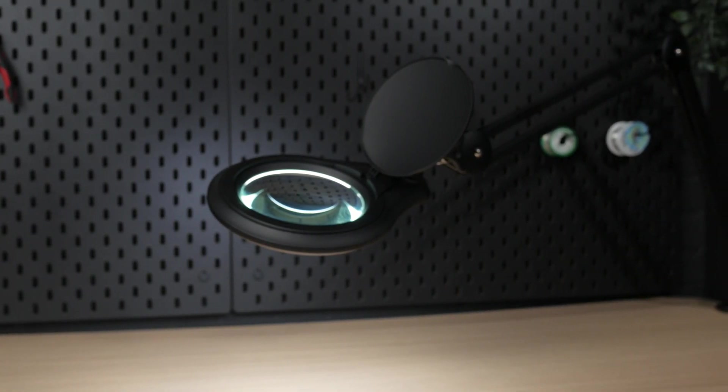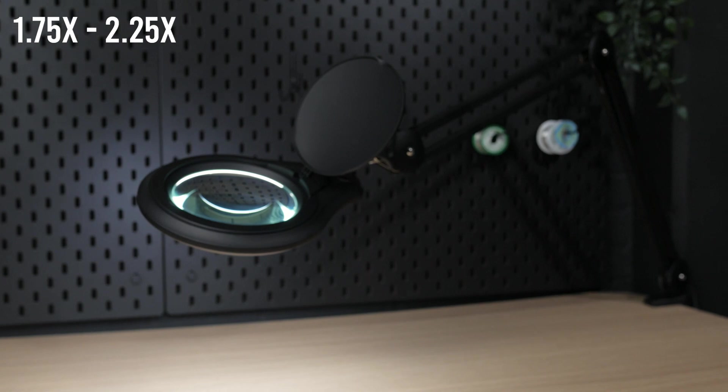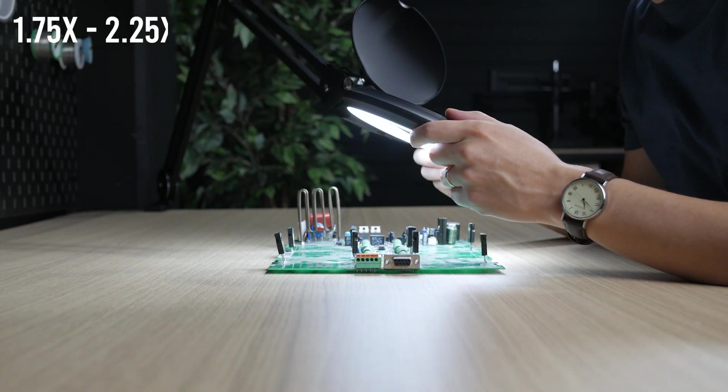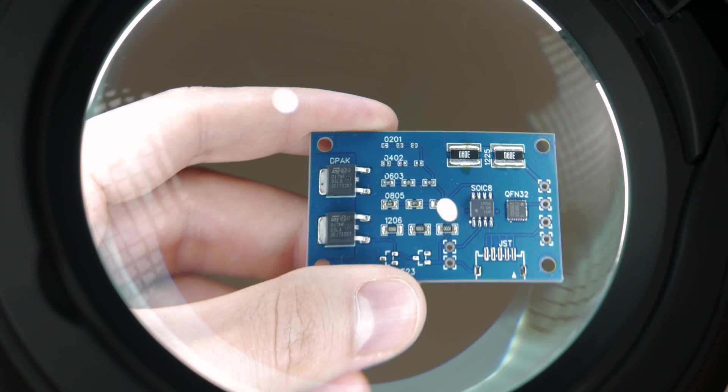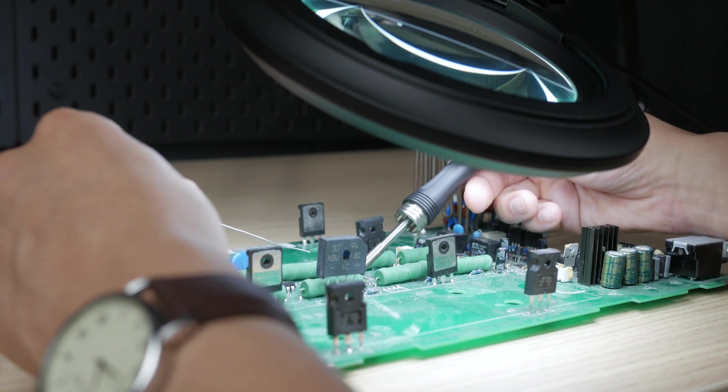Magnifier lamps often have a magnification of 1.75 or 2.25. This is often enough for simple inspection work, reading small prints on components, or simple soldering work.